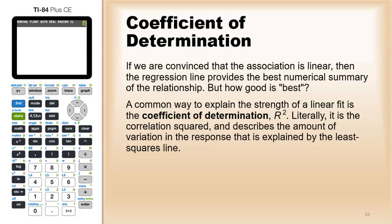But the question is, how do you figure out what's the best line? What's the best way of drawing a line through your points? Well, a common way to explain the strength of a linear fit is with what's called the coefficient of determination, which is abbreviated r squared.